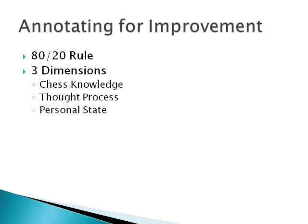There are three general dimensions to look at when it comes to improving. First, chess knowledge — that could be opening or middlegame principles, tactical patterns, or plans within specific opening structures. Second, our thought process — that includes calculation, evaluation skills, and what aspects of the position we focus on too much or not enough. Third, our personal state — were we tired, were we distracted? These two principles should guide us when annotating for improvement.